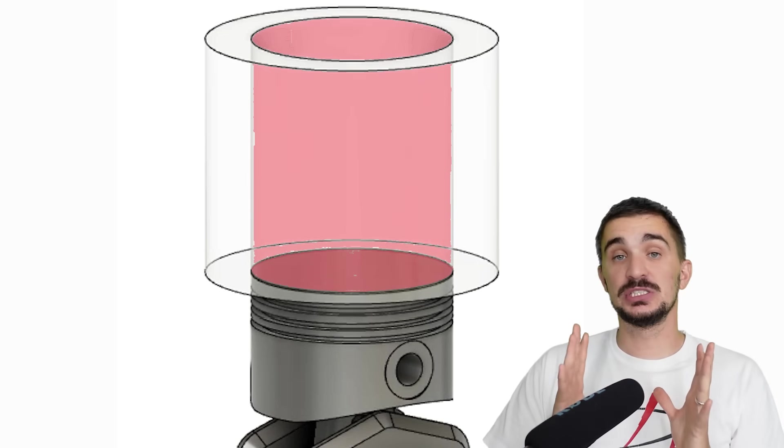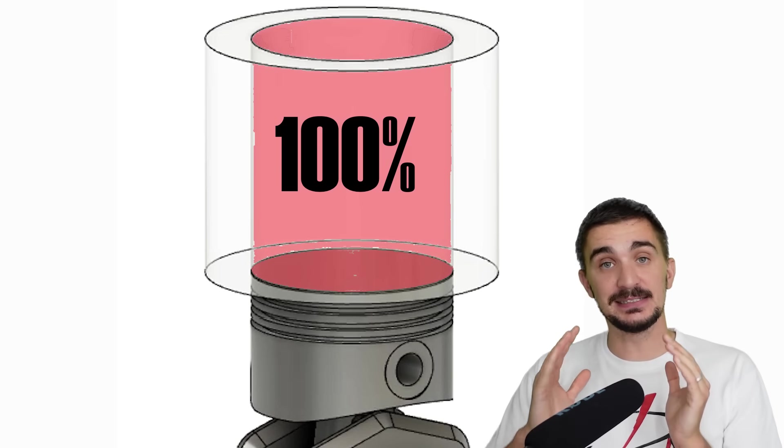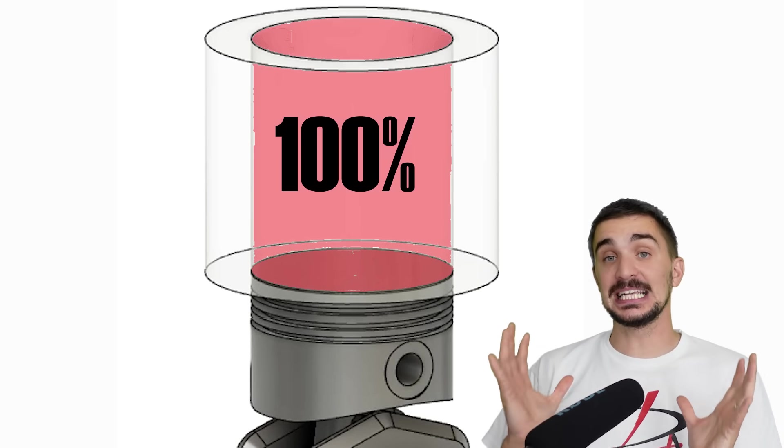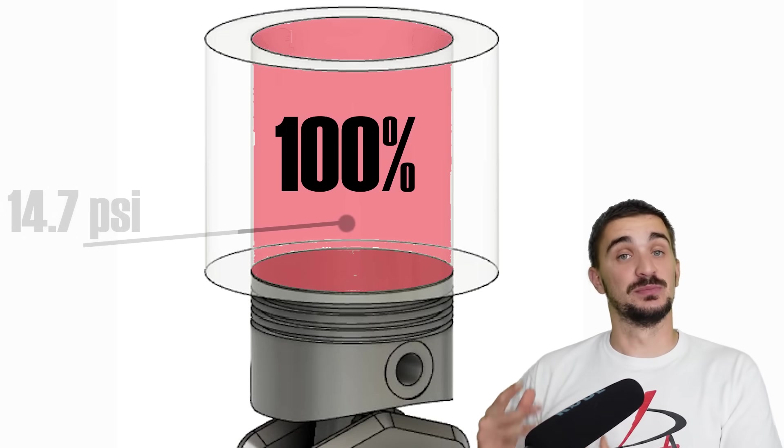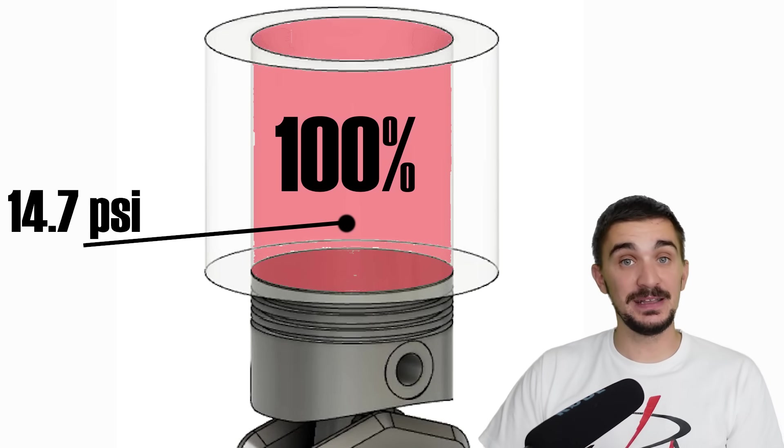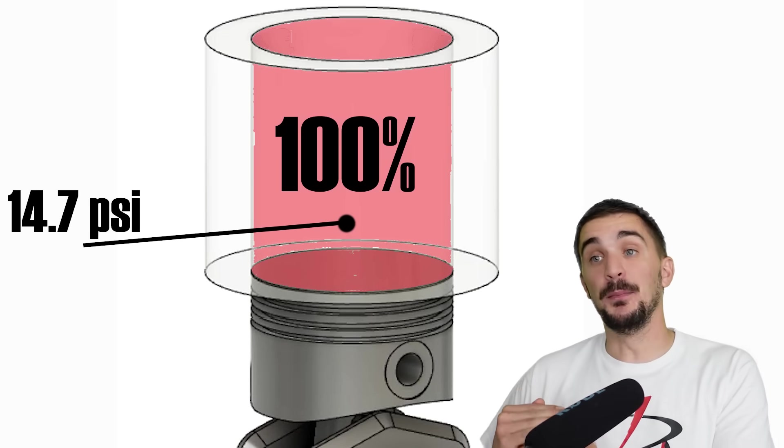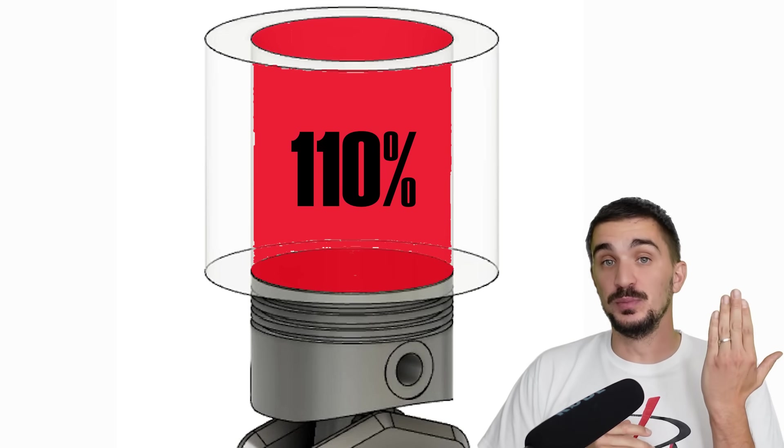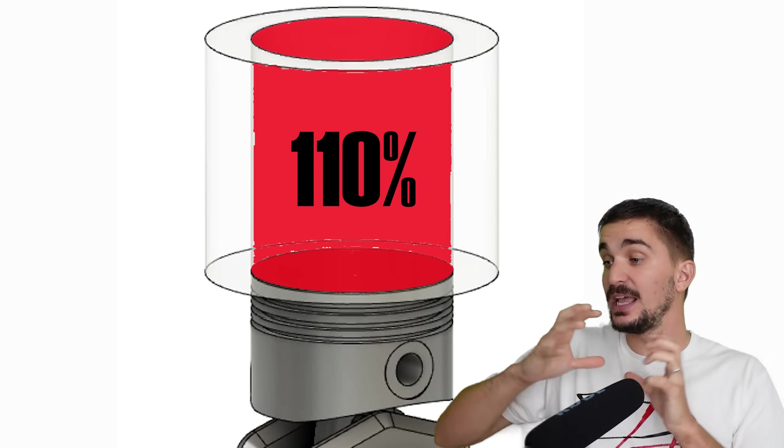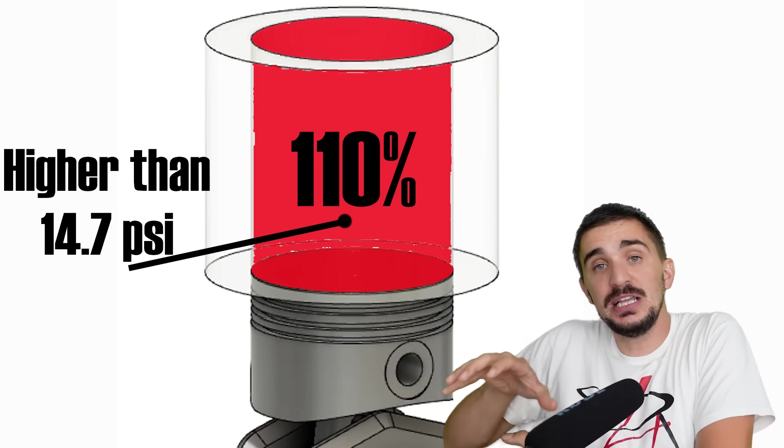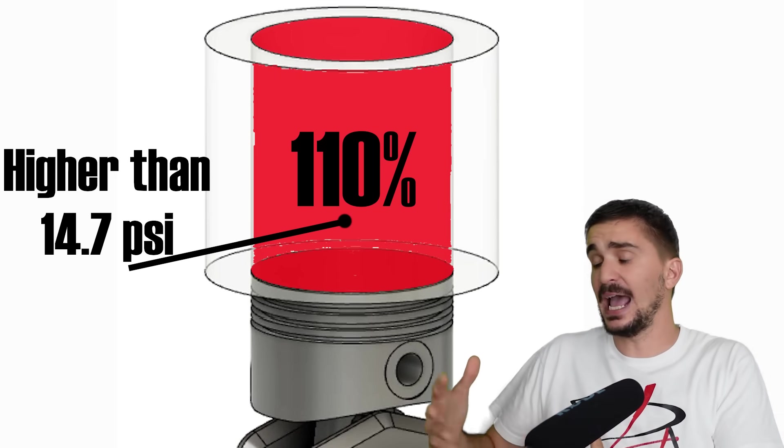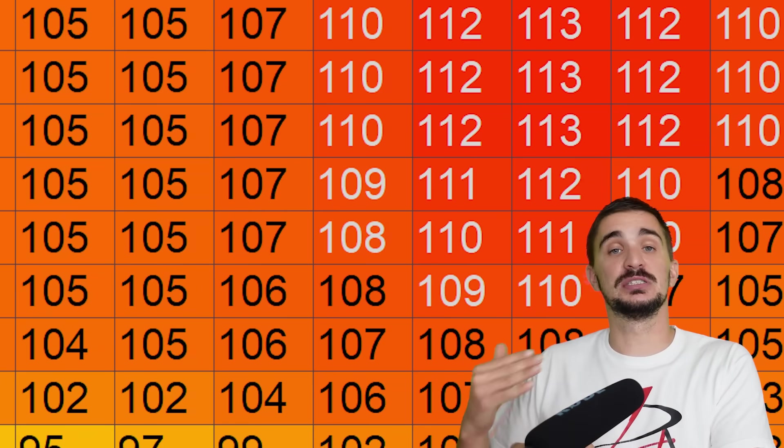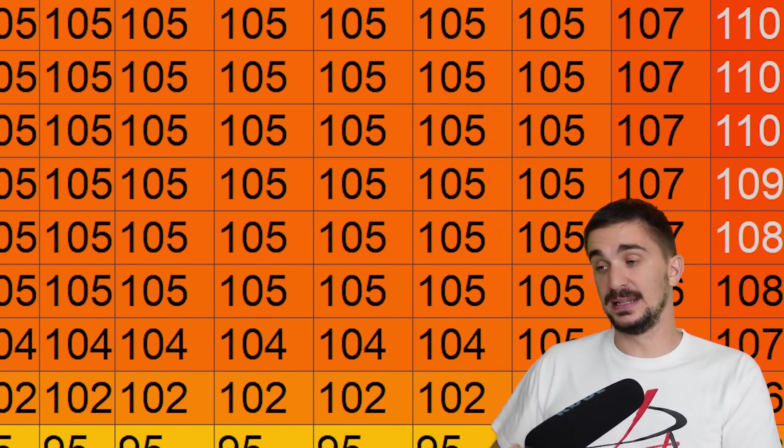So a volumetric efficiency of 100% tells us that the entire displacement or internal volume of the engine has been filled with air at atmospheric pressure. So consequently, a volumetric efficiency above 100% for example 110% occurs under boost. And it tells us that we have stuffed in more air into the cylinder than would be possible with atmospheric pressure alone. And this is why volumetric efficiency goes above 100% under boost.